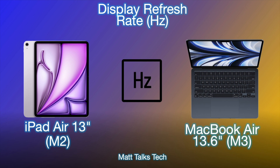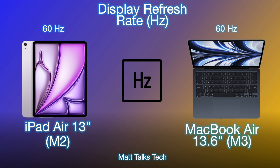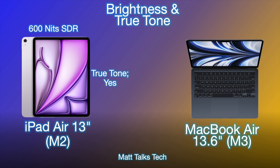One thing that hasn't changed is the refresh rate — both models have a 60Hz refresh rate. It looks like Apple is keeping ProMotion exclusive to their pro-tier displays and devices, including Pro MacBooks, Pro iPads, and Pro phones. For brightness, both models are very similar with a 600 nits standard display. It's good enough to use outside, but if you want a much brighter display you're better off getting a Pro model.